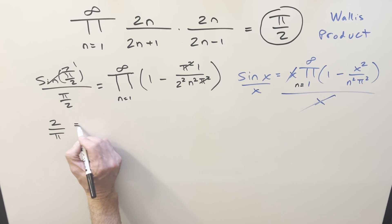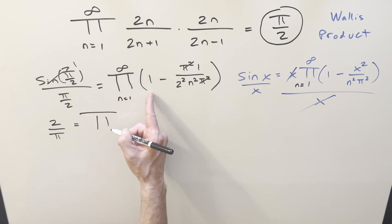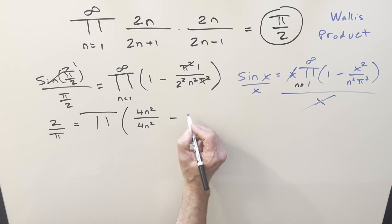So then on the right side, to simplify this thing, let's get a common denominator so I can write this as, yeah, let's change that to a 4. So I'll write it as 4 n squared over 4 n squared minus 1 over 4 n squared.